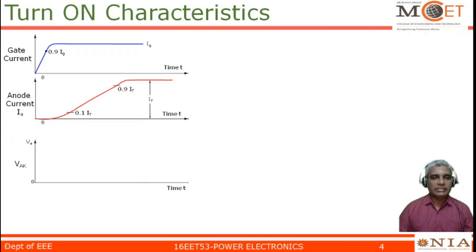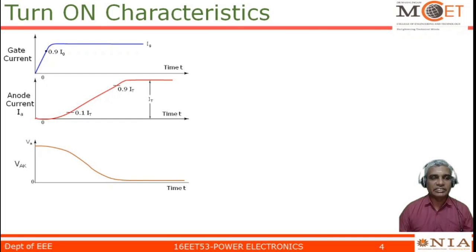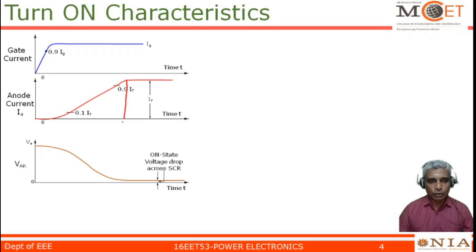As the anode current rises from zero to maximum IT, the gate current also rises from zero to its maximum IG. At the same time, the anode-to-cathode voltage VAK decreases — current increases during turn-on while voltage decreases. The voltage remaining across the device once it is completely turned on is called the on-state voltage drop across the device.